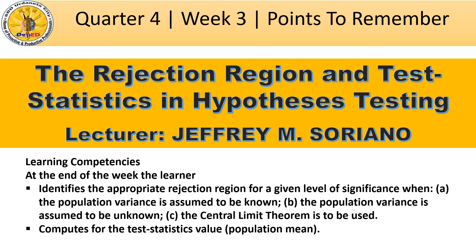Basically, this is still part of our processes encountered in hypothesis testing. In week one and week two, we learned the two types of hypothesis — null and alternative hypothesis. We also learned how to select what type of test statistics is to be used. So now, we will be dealing with how to compute for the test statistics for the population mean, and also how to find the appropriate rejection region given the level of significance.